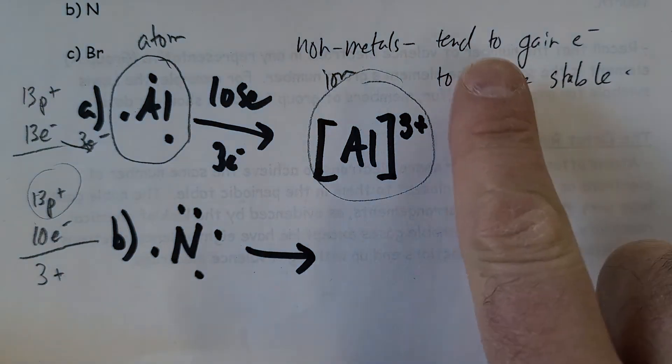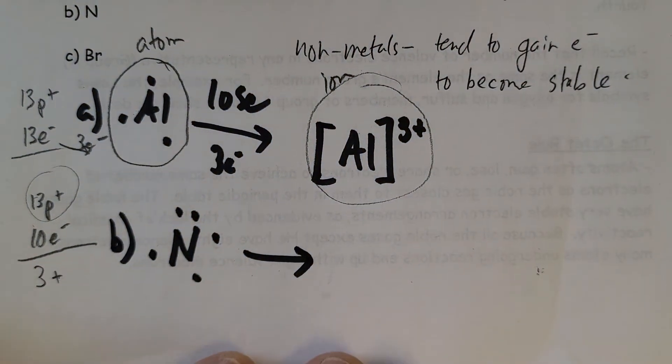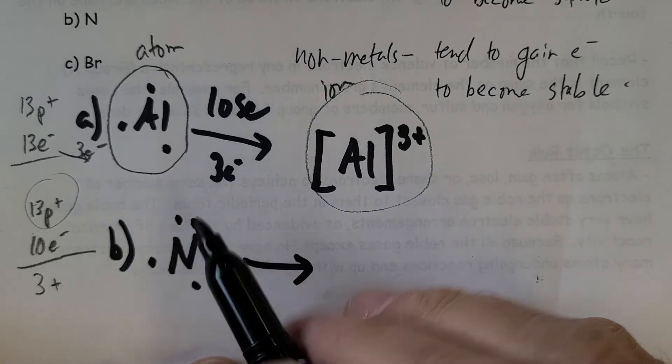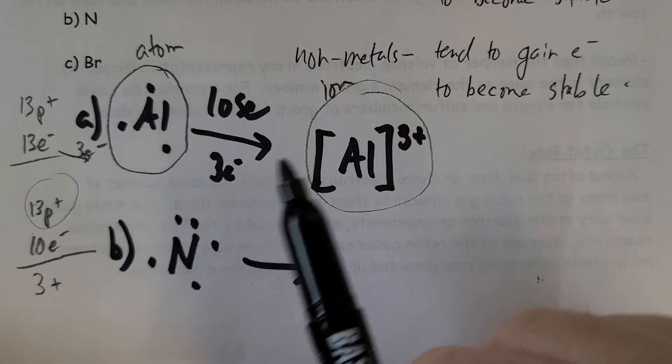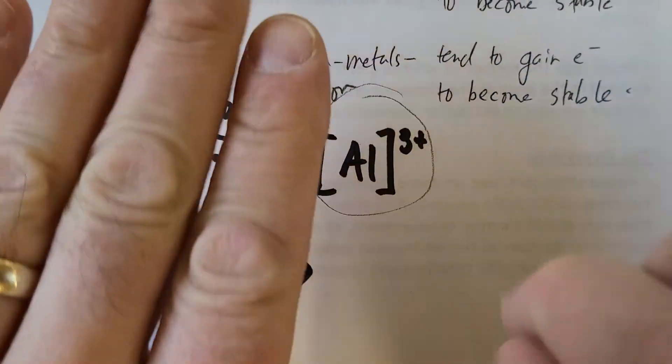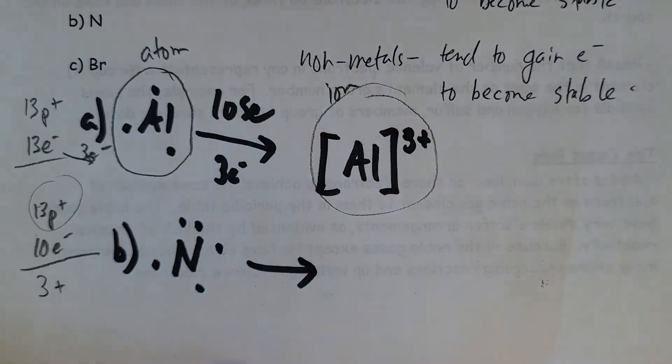And that makes sense. Whatever involves the lowest number. It has five. If it gains three, it can have eight. If it is to lose, it would have to lose five. So you kind of think of it: what's easier, gain three or lose five? What involves the lowest number?